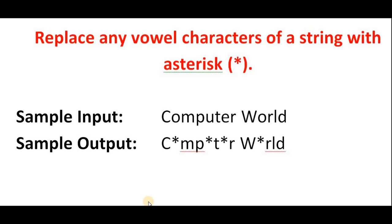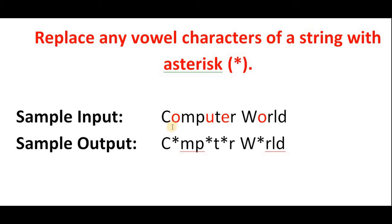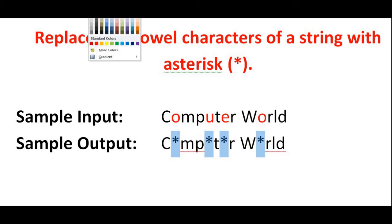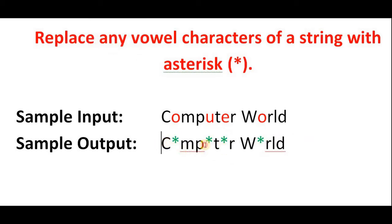Let's begin with an example. Assume we have taken the string 'computer world'. In this string, the vowel characters are being selected and highlighted. These vowel characters have now been replaced with asterisks. All the vowels are replaced with the asterisk symbol. The consonants, spaces, numbers, or any special characters all remain as they are — only the vowels will be replaced with the asterisk.